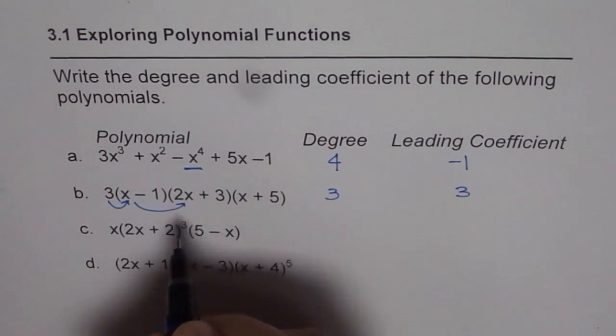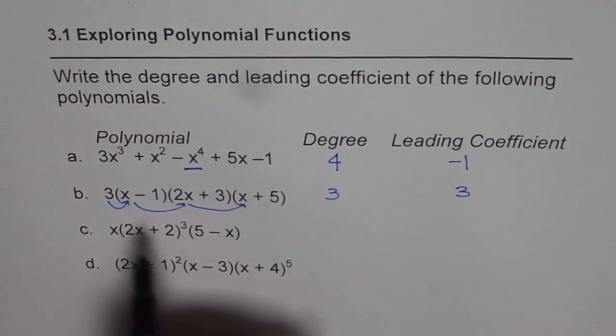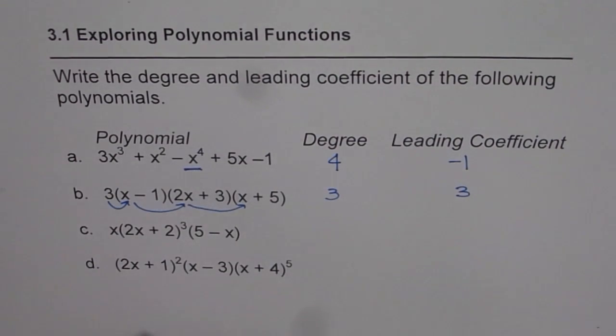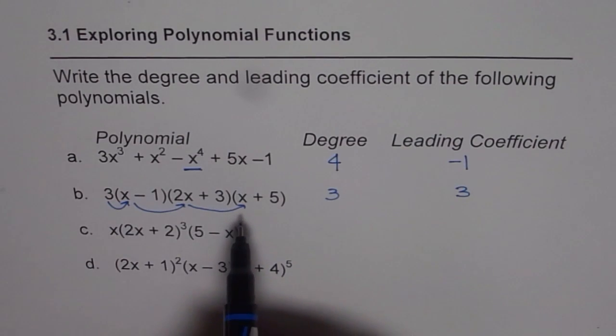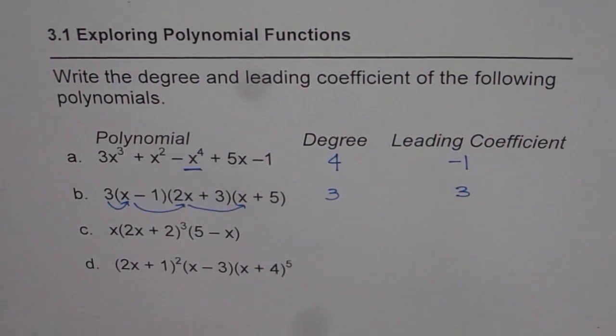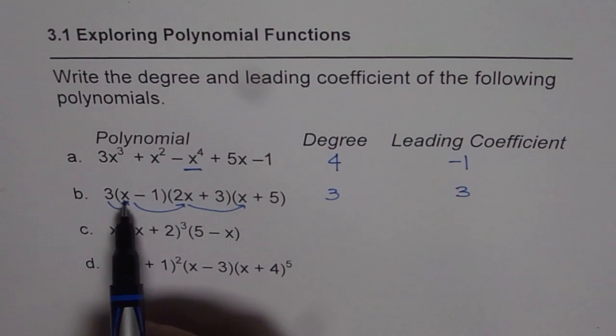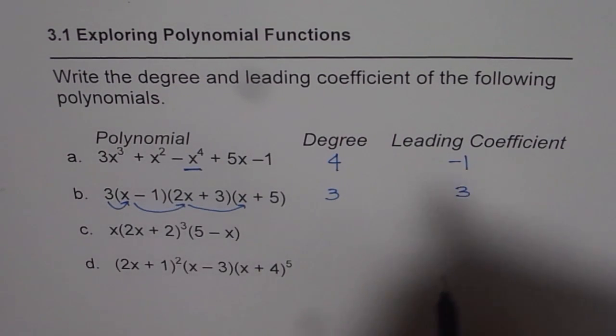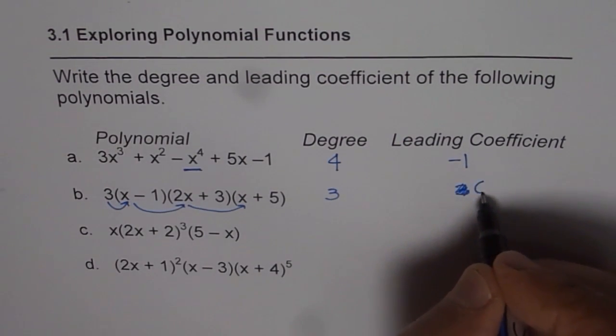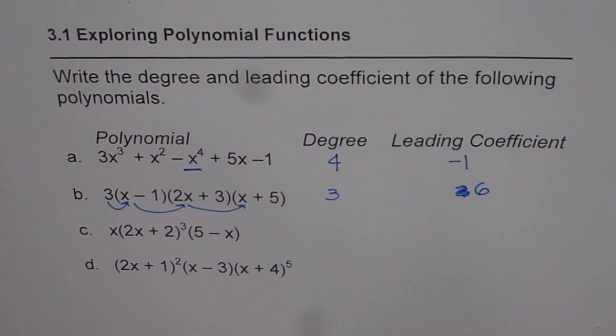These terms when multiplied will give you the leading term from where you can find degree and the leading coefficient. I think I did something wrong. Let us do it again. 3 times x is 3. 3 times 2 is 6. So it should have been 6. So leading coefficient is 6 for us.